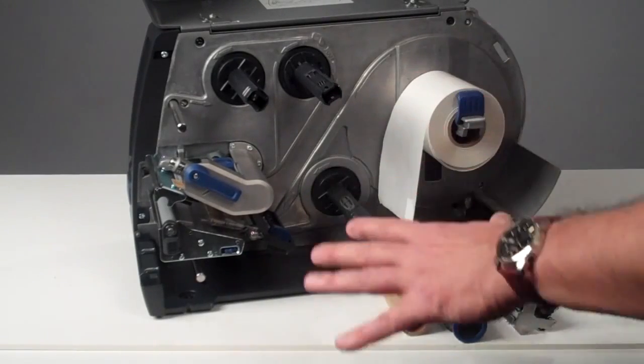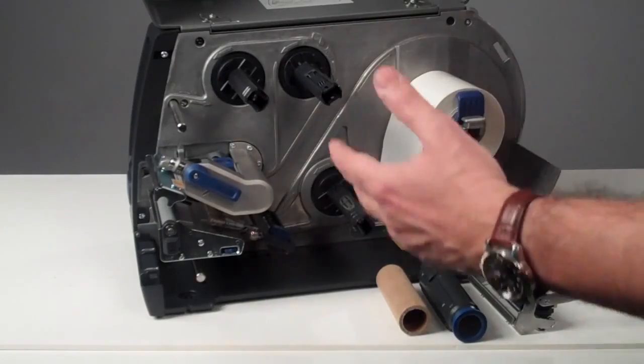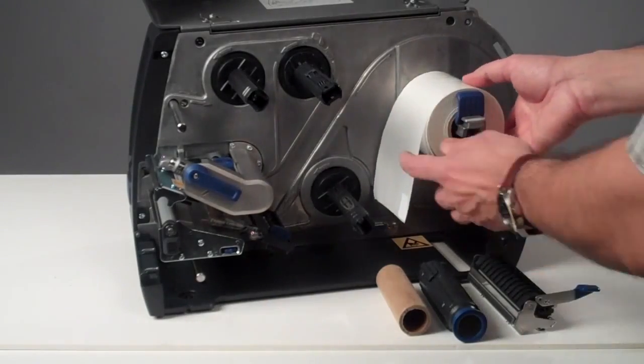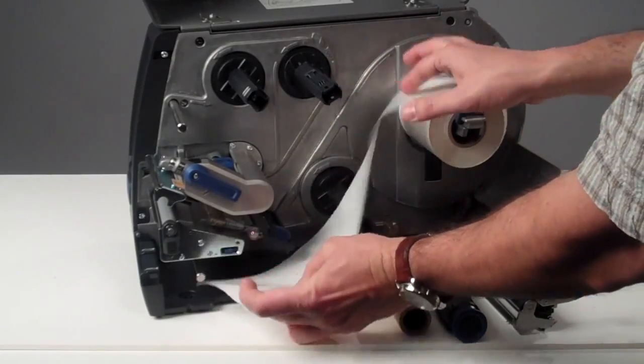The Intermec PM43 comes with a variety of different ways to rewind the liner and peel off or dispense the labels. To wind the label and liner in is very easy. I'll show you the ways to go.